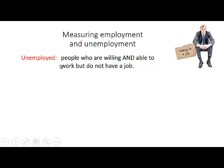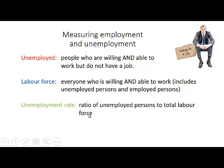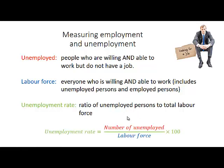Unemployed persons are people who are willing and able to work but do not have a job. The labor force is everyone who is willing and able to work, therefore it includes the unemployed persons and the employed persons. The unemployment rate is the ratio of the unemployed persons to the total labor force. The formula is the number of unemployed divided by the labor force times 100 to turn it into a percentage.